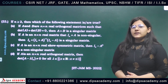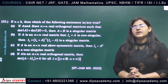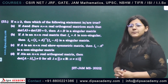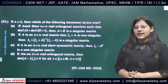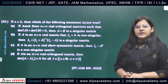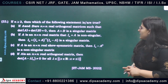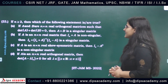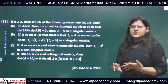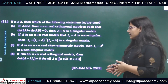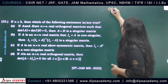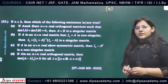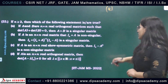In this question, we are given four statements out of which we need to find out which is correct and which is incorrect. This is a multiple select question, that is more than one option can be correct. We will start with option A. Option A states that if A and B are n×n real orthogonal matrices such that determinant of A plus determinant of B equals to 0.